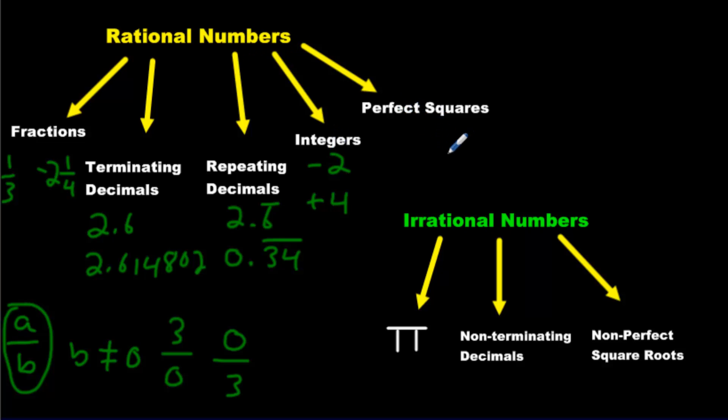We also have perfect squares. What are perfect squares? Well, if you take, let's say, 2 times 2, that makes 4. And if I put a funny symbol like this over the 4, that's not division. That's not long division. That's square root.